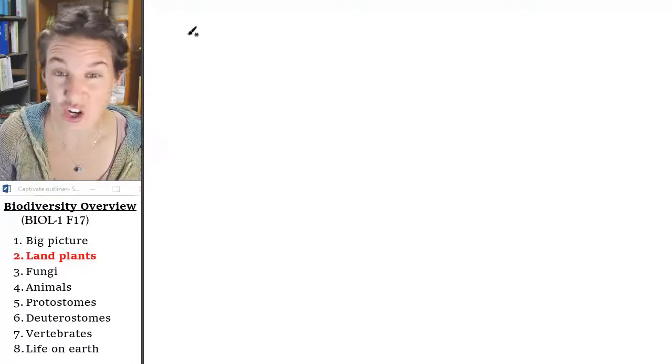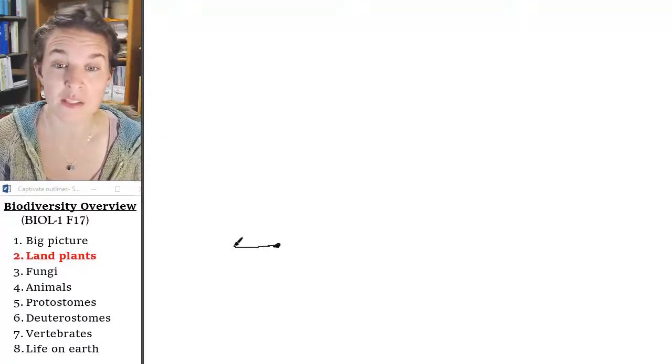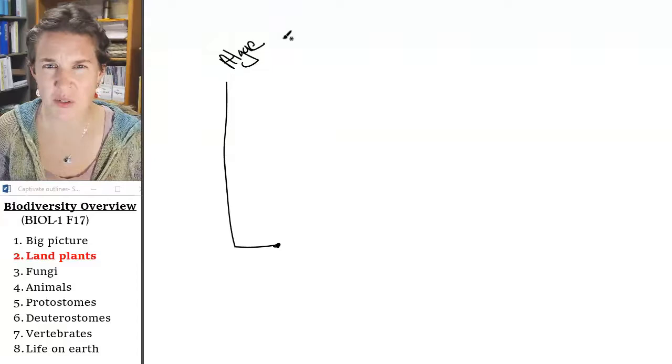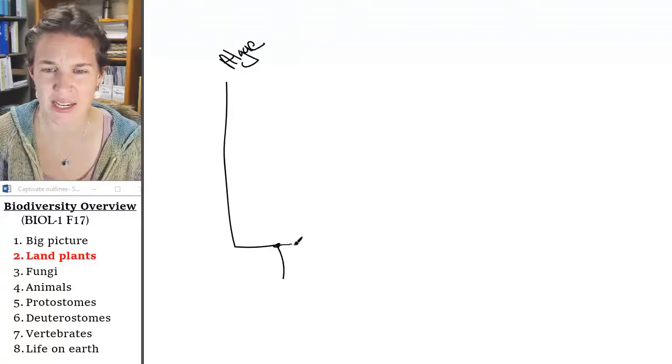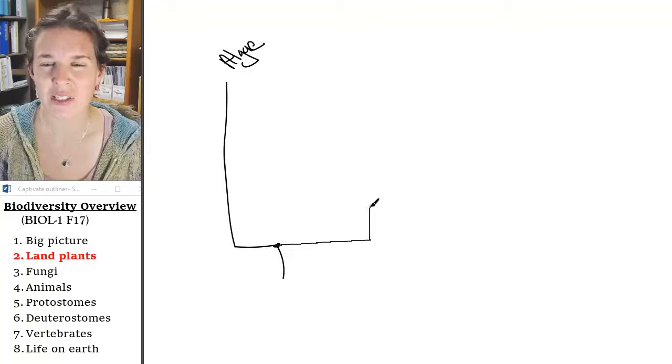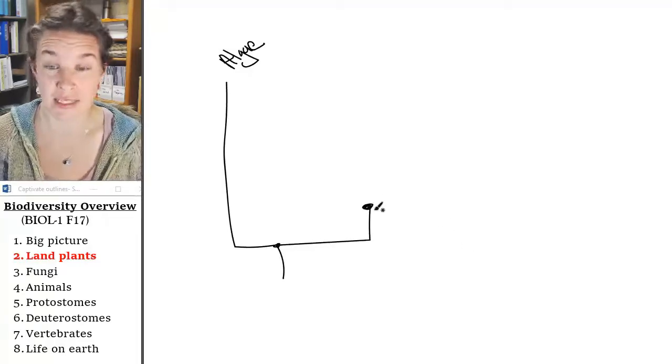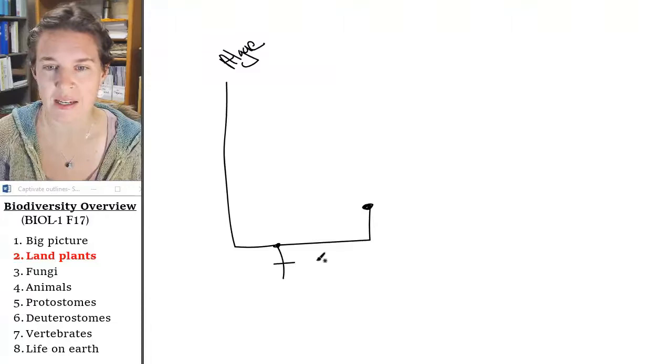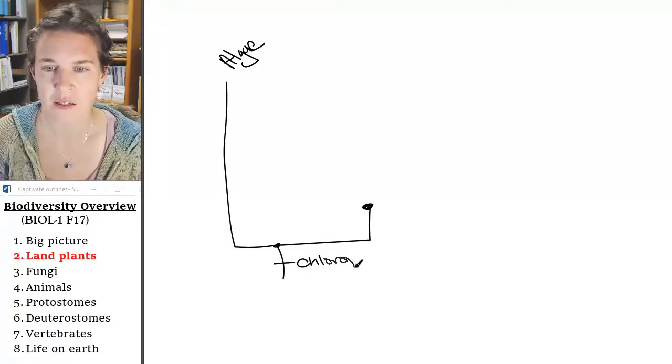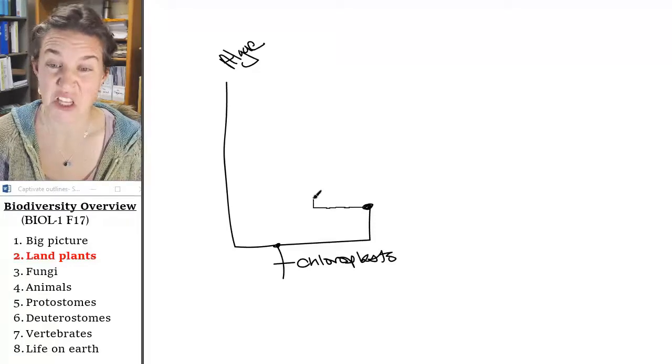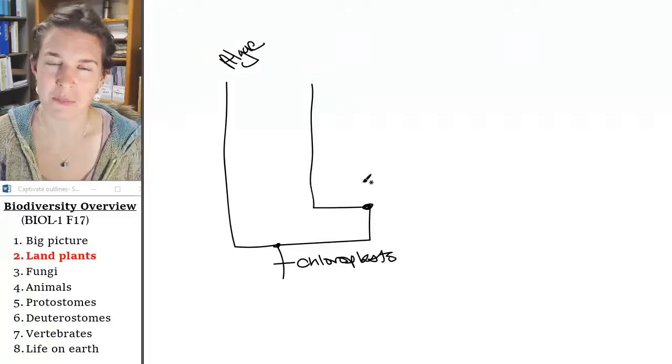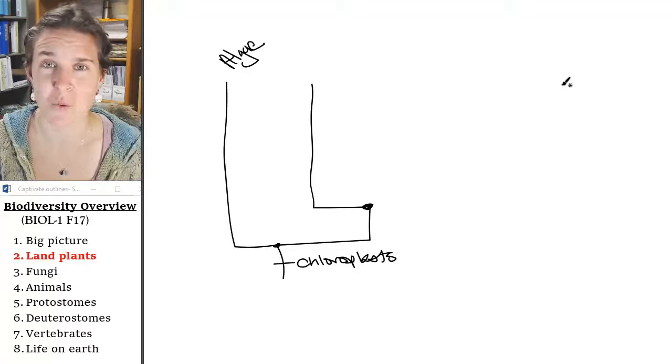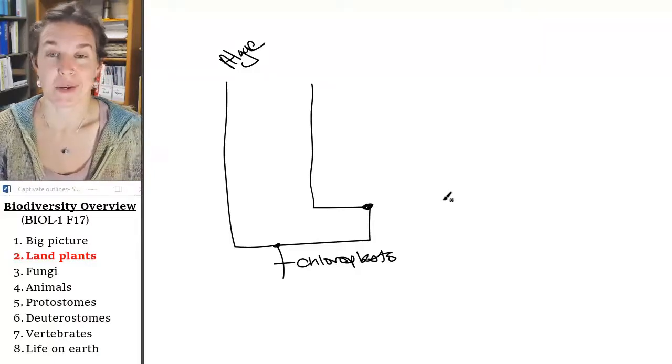So let's start by remembering that the sister group to our land plants are algae. So all I'm doing is taking the clade that we already identified and now we're going to look at everything beyond here is a land plant. It's a multicellular organism. Let's just throw it in here that has chloroplasts and lives on land, although some of them moved out away from land. They're like, this land stuff is garbage. I'm a land plant, but I don't live in the water. All right, so land plants.